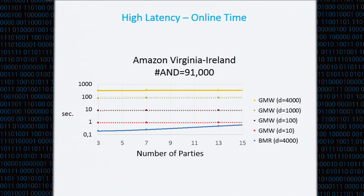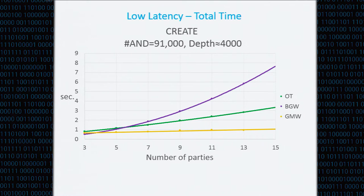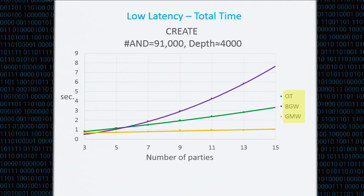Moving on to the low-latency setting, the picture is really completely different. Here we see that GMW basically outperforms our implementation. This graph is from CREATE, which is a very low-latency cluster. In general, GMW outperforms our implementation, except maybe for three parties. Also, while for three and five parties BGW outperforms the OT implementation, for the larger number of parties BGW degrades very quickly, due to its cubic computational complexity.